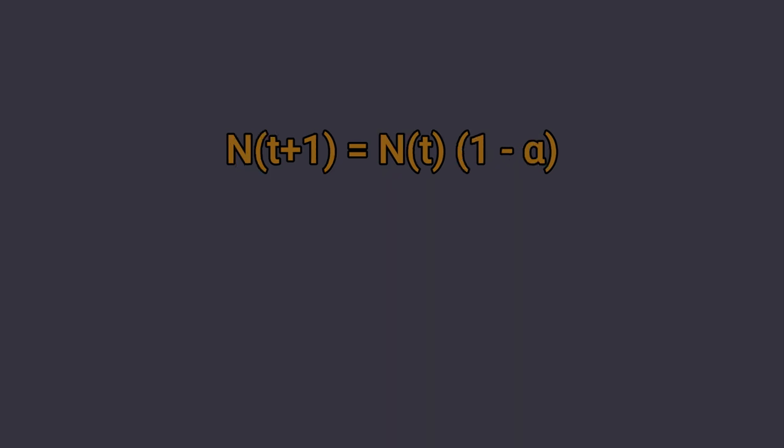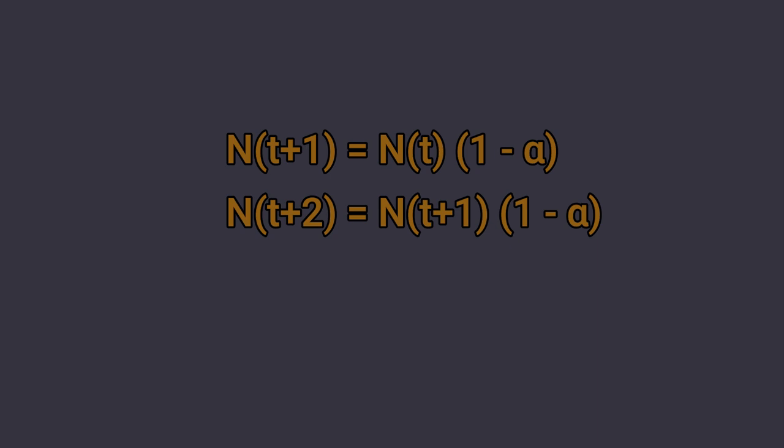So globally N(t+1) equals N(t) multiplied by (1 minus alpha). Let's try to calculate the population at t plus 2. It will be the population at t plus 1 multiplied by (1 minus alpha), from the previous formula.